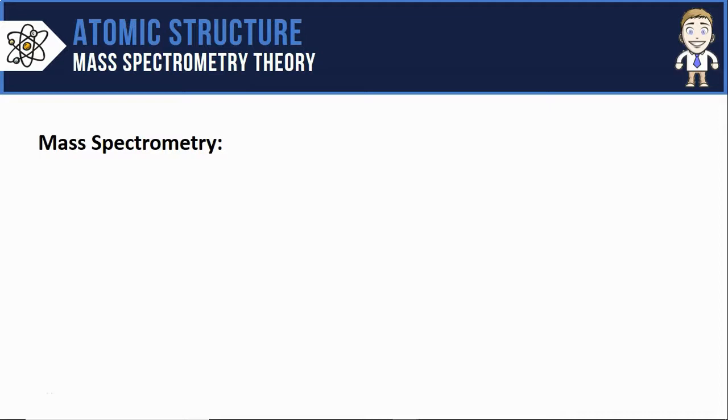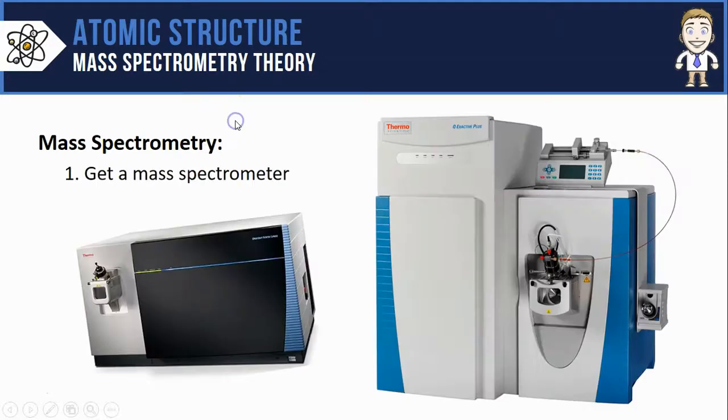So in this video, let's start off with just a broad overview of what the process might look like. The first thing you need is to get yourself a mass spectrometer. These are very large, very complex instruments. Here's some examples of what they look like.